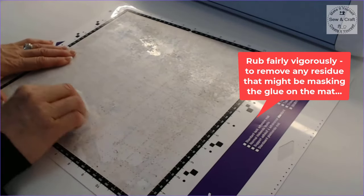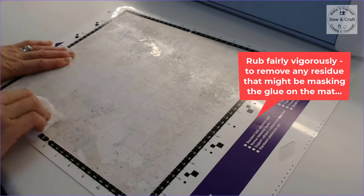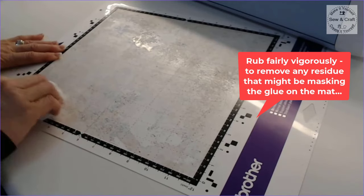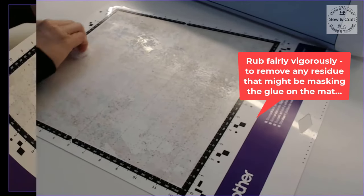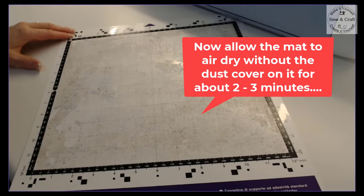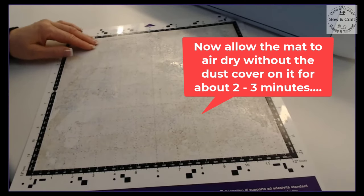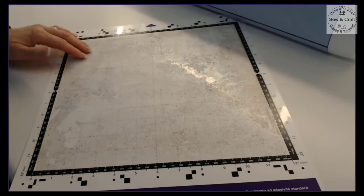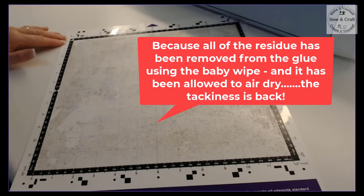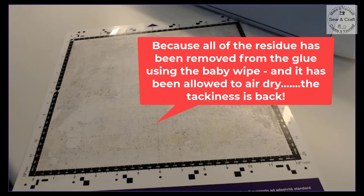You're going to fold the little wipe up and rub fairly vigorously to remove any residue that might be masking the glue that is still on the mat. Just flip it over and give the back a quick wipe as well. Once you've done that, allow the mat to air dry without its dust cover on it for about two to three minutes.